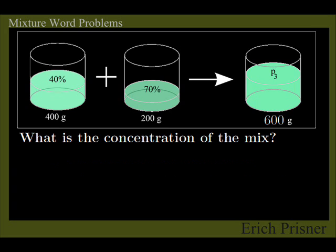For the second part, let me ask you what you would guess. What do you think would be about the concentration of the mix? I hope none of you said 110%. First of all, 110% is impossible and also the percentages do not add. I hope most of you gave an answer between 40% and 70% between the percentages of the ingredients. The percentage of the mix is always between the percentages of the ingredients.